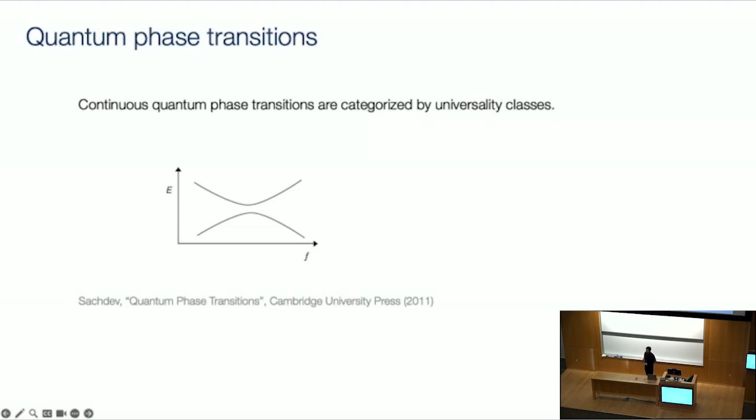focusing particularly on second order or continuous quantum phase transitions. So the nice thing about continuous quantum phase transitions is that they can be characterized by universality classes, so we don't need to worry about the microscopic details of each individual system. But by and large,